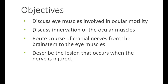Our objectives are to discuss the eye muscles involved in ocular motility, to discuss the innervation of the ocular muscles, to route the course of cranial nerves from the brainstem to the eye muscles, and to describe lesions that occur when the nerve is injured.